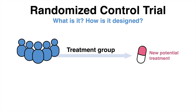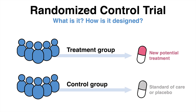In an RCT, there is always a treatment group and a control group, as the word already gives away. For the validity of the study, it is extremely important that prior to the intervention, both groups are as similar as possible to each other, such that any difference which might eventually be found between the groups can be attributed to the treatment, rather than differences between the groups that already existed beforehand.